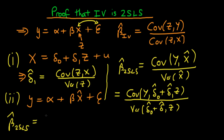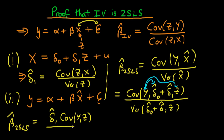Continuing the simplification: β̂_2SLS will have δ̂₁ on the top — the covariance between y and the constant δ̂₀ contributes nothing, so we just get δ̂₁ times the covariance of y with z on the numerator. On the denominator, the constant drops out and we get δ̂₁ squared times the variance of z. We can then cancel one δ̂₁, leaving one δ̂₁ remaining in the denominator.